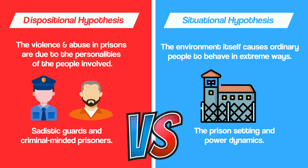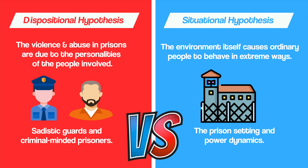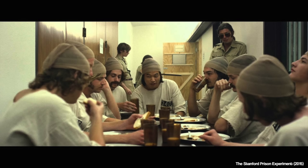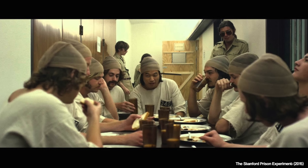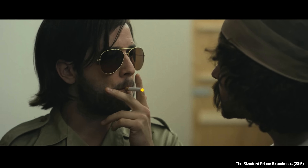The Stanford Prison Experiment revealed how strongly social roles can influence behavior. It showed that it's not just who we are — our personality — that shapes our actions, but the situations we're placed in. Even healthy, stable individuals can conform to extreme behaviors when placed in an environment that strips identity and reinforces power hierarchies.